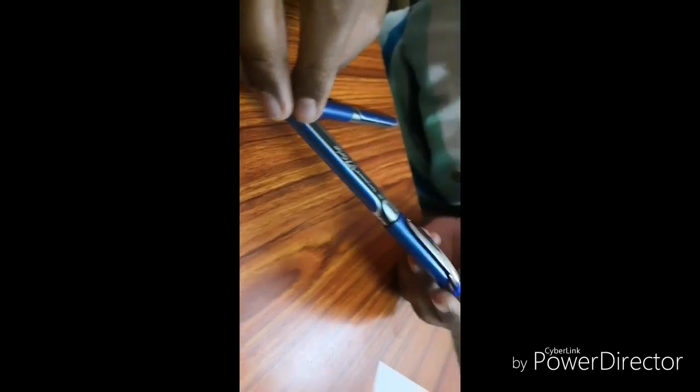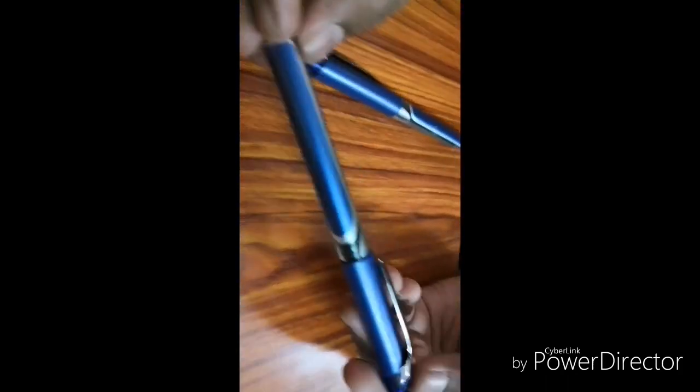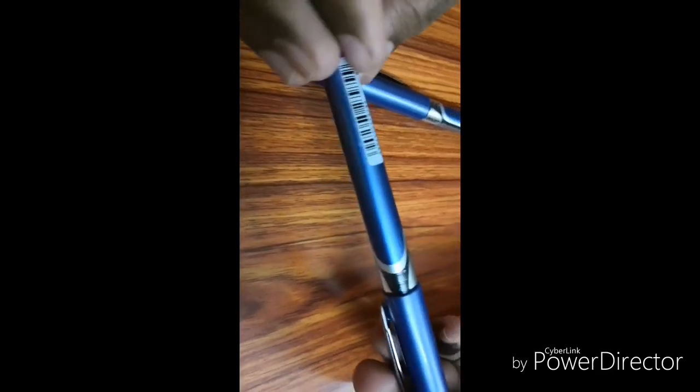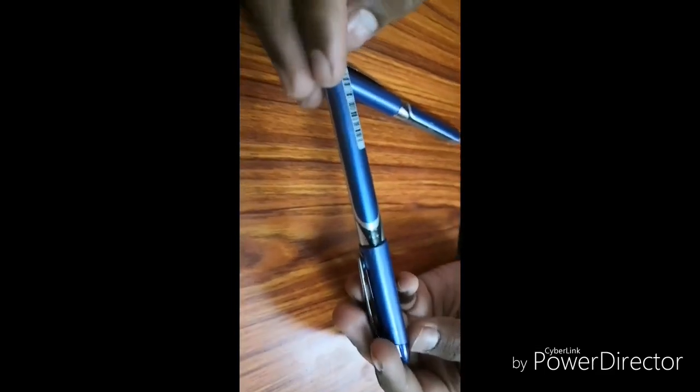As you can see, Pilot is written on the clip, silver clip at the top. We can see how much fill is left, so that's a cool feature. Barcodes, media, blue, Japan written here, and here it is transparent.